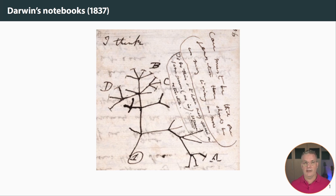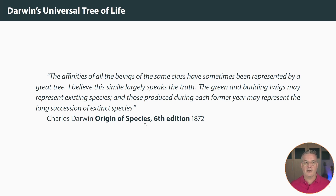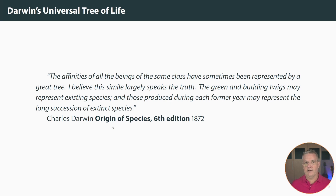That's 22 years before the publication of The Origin of Species. Later, when he wrote The Origin of Species, and by the time it was in its sixth edition in 1872, he wrote this — and I think this is quite beautifully written: 'The affinities of all the beings of the same class have sometimes been represented by a great tree. I believe this simile largely speaks the truth. The green and budding twigs may represent existing species, and those produced during each former year may represent the long succession of extinct species.' There's so much packed into this that is still the case in the way we understand the trees that we end up drawing in phylogenetics.